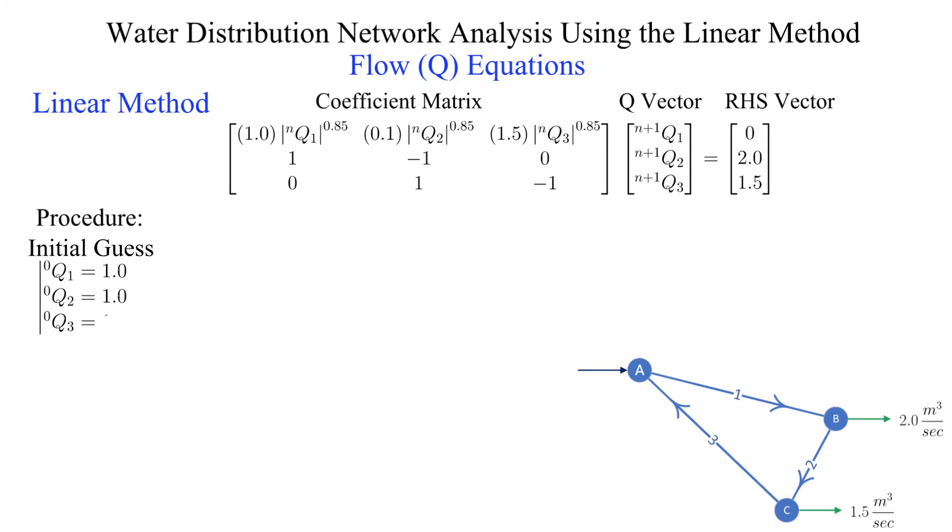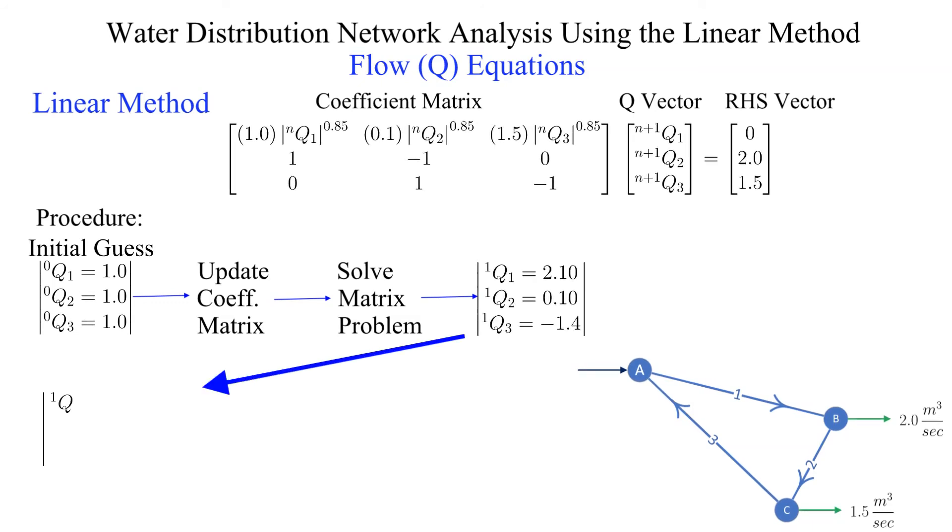We start with an initial guess for the flows, calculate the coefficients for the energy equation, and then solve for the unknown flows. We iterate until we achieve the desired convergence criteria.